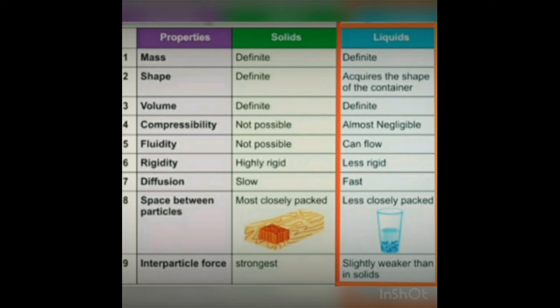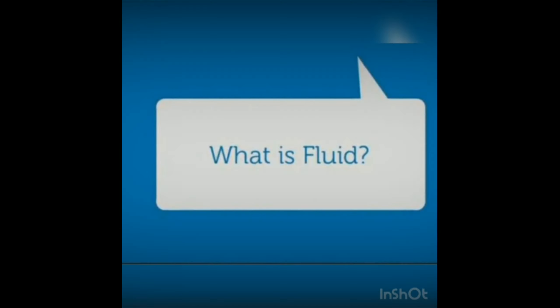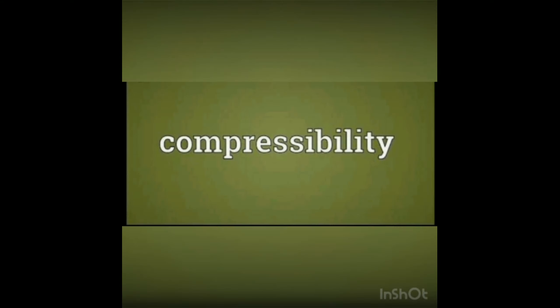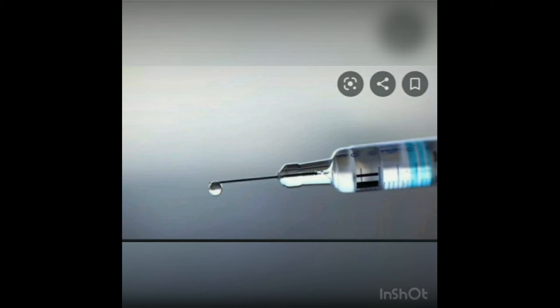Liquids can flow easily, hence they are also called fluids. A fluid is a substance that has no fixed shape and yields easily to external pressure. Coming to compressibility: liquids show less compressibility compared to gases. Fill a 50 ml syringe with water and press the piston — it is somewhat hard to press. Liquids show compressibility but less than gases, and fluids are less rigid.